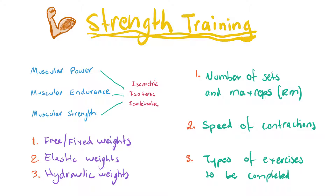When we look at strength training, we have three different types: free or fixed weights, elastic weights, and hydraulic weights. Some people will use a combination of all three, but each different type of training is quite specific to muscle groups, sports types, or availability of equipment.